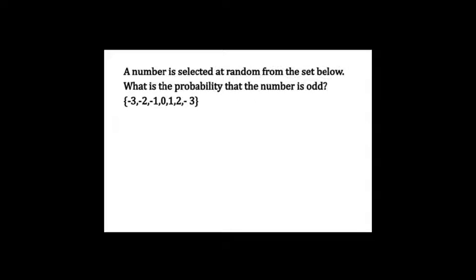The next question says a number is selected at random from the set below — what is the probability that the number is odd? The numbers we have are negative 3, negative 2, negative 1, 0, 1, 2, and 3. Since the question asks for the probability of the number being odd, let's exclude all the even numbers. The even numbers are negative 2, 0, and 2.